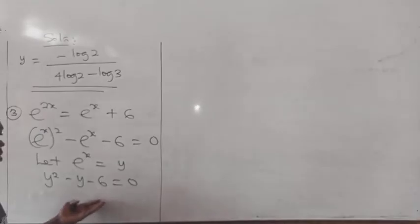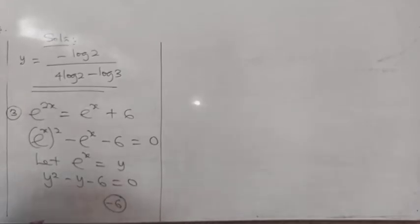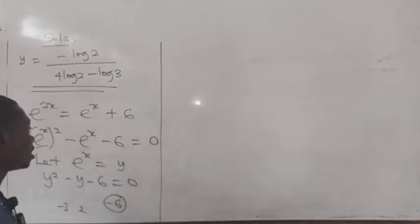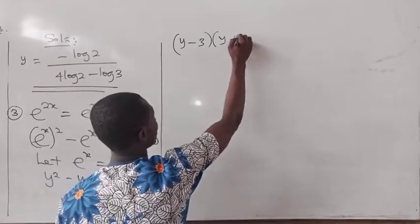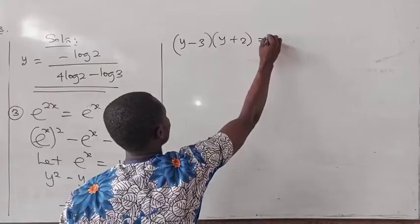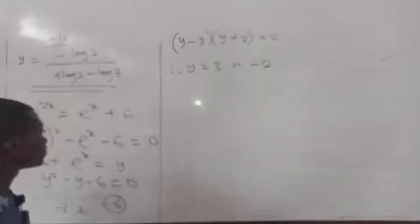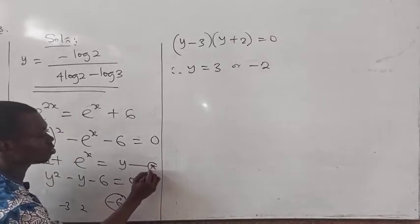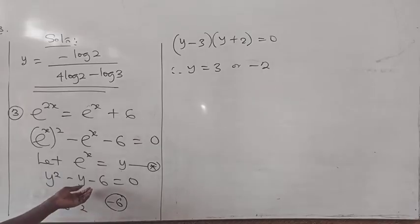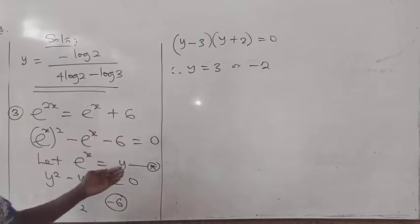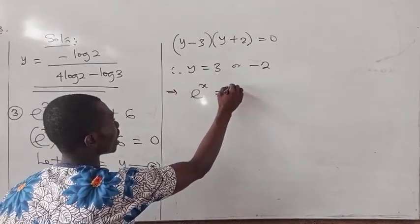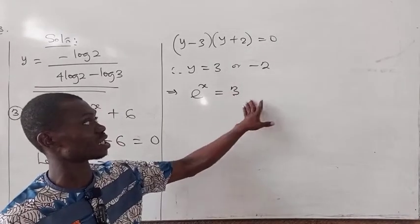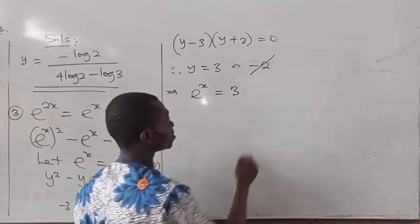Solving the quadratic, we look for two factors of minus 6 that sum to minus 1, which are minus 3 and plus 2. Opening two brackets gives (y minus 3)(y plus 2) equal to 0, so y equals 3 or y equals minus 2. Coming back to the equation, since y represents e^x, y cannot be negative because the exponential function is always positive. So we rule out y equals minus 2, and y equals 3 only.